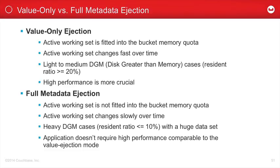Full metadata ejection is essentially the opposite use case — especially heavy DGM scenarios where the resident ratio is less than 10%, 5%, or even 1%. When the application doesn't require the same high performance as value-only ejection mode — it's a trade-off: more memory for faster performance. If you have limited memory and want to store more data on disk, full metadata ejection is recommended. A good example is a user profile database: if only 20% of users are regularly active, you don't want to maintain metadata for 80% of users in cache. User profile data can be terabytes or even hundreds of terabytes. The default mode is value-only ejection, but you can change to full metadata ejection per bucket — though it requires a bucket restart.